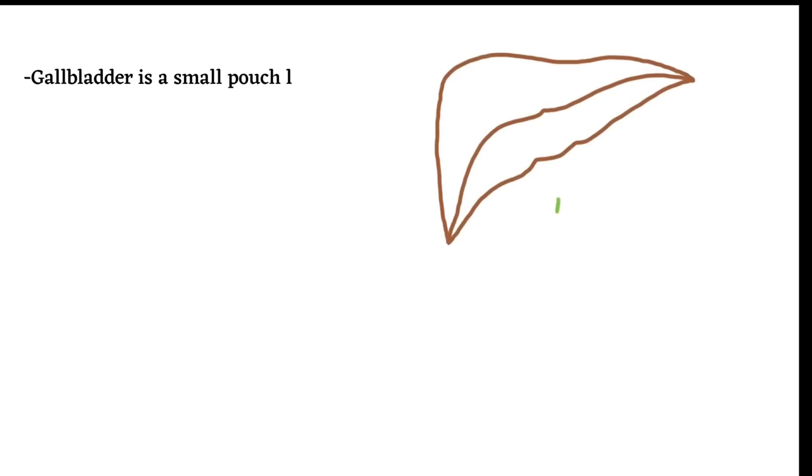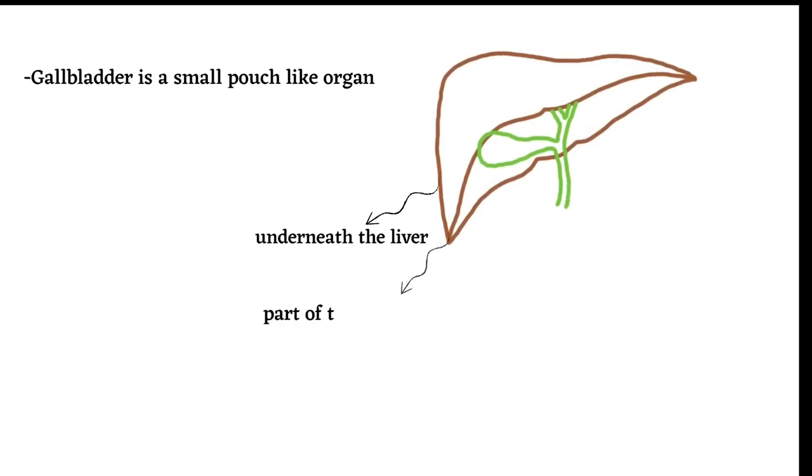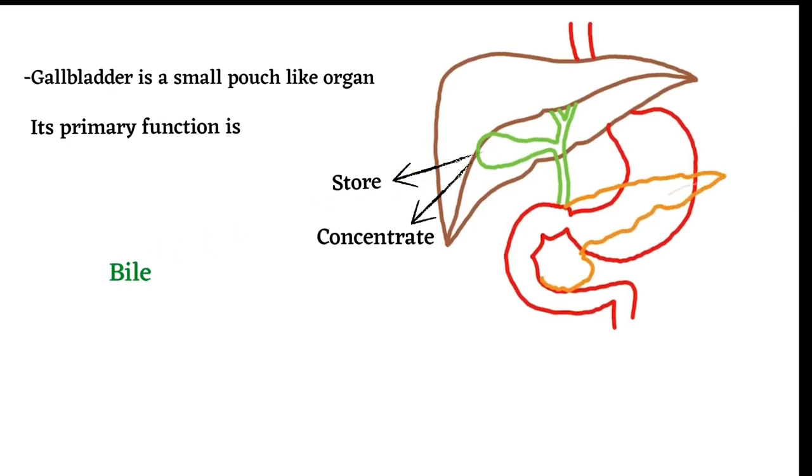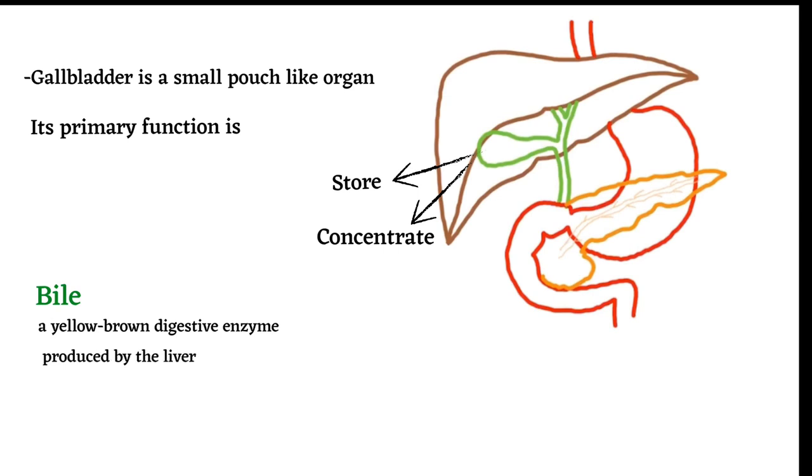The gallbladder is a small pouch-like organ found underneath the liver on the right side of the abdomen and is part of the biliary tract. Its primary function is to store and concentrate bile, a yellow-brown digestive enzyme produced by the liver.